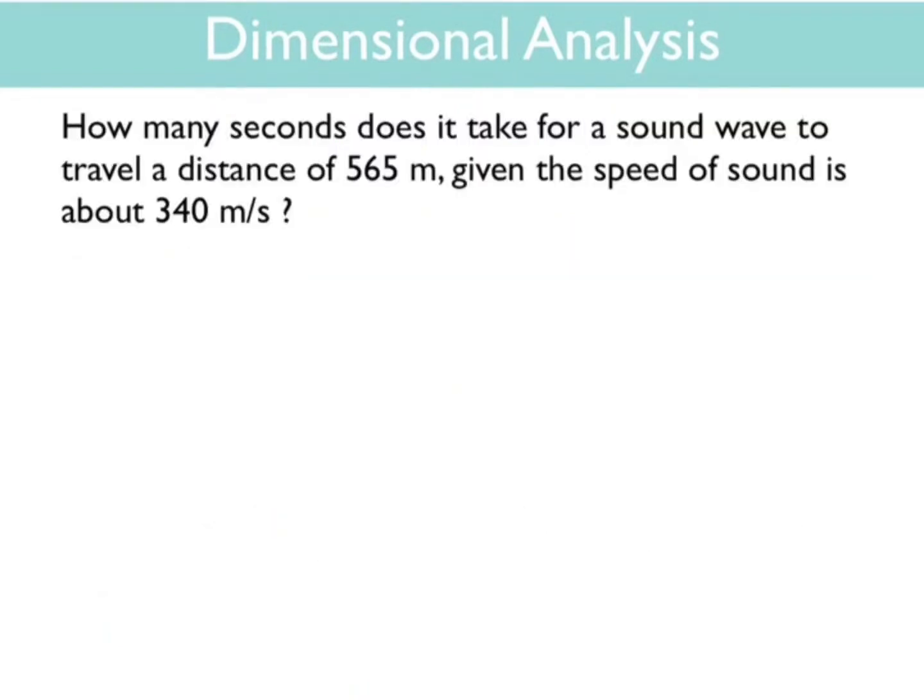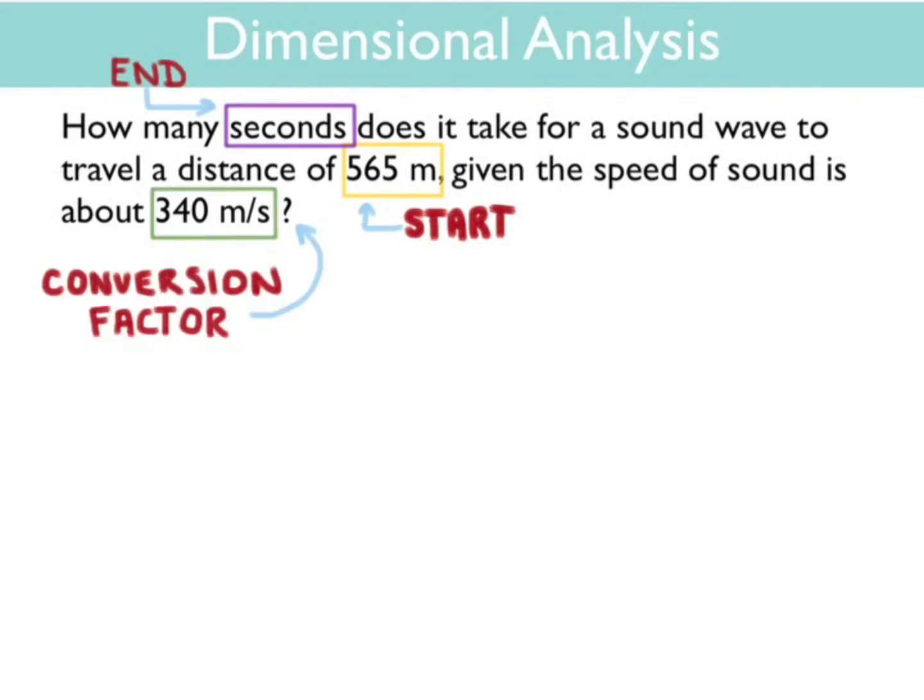Let's look at a physics problem for example. How many seconds does it take a sound wave to travel a distance of 565 meters given the speed of sound is 340 meters per second? With problems like this, what you first want to do is establish where are you starting. In this case, we're starting with 565 meters. You then want to figure out what are you trying to find. In this case, we're trying to find seconds, which is the unit of time. Another thing to look for is given information, in this case a conversion factor. The speed of sound converts meters into seconds and seconds into meters.